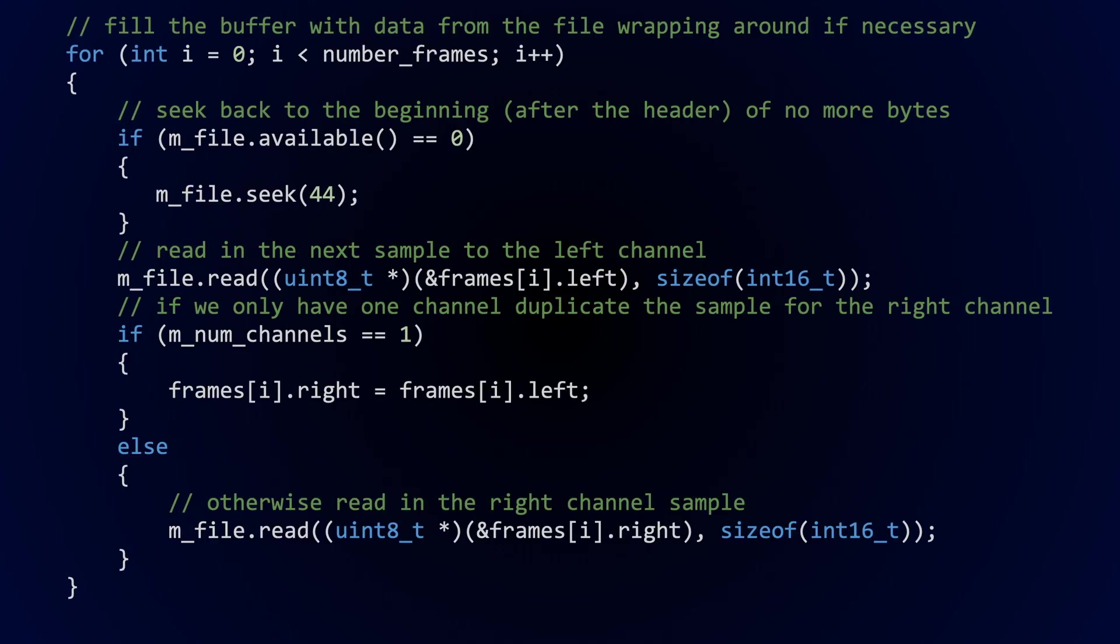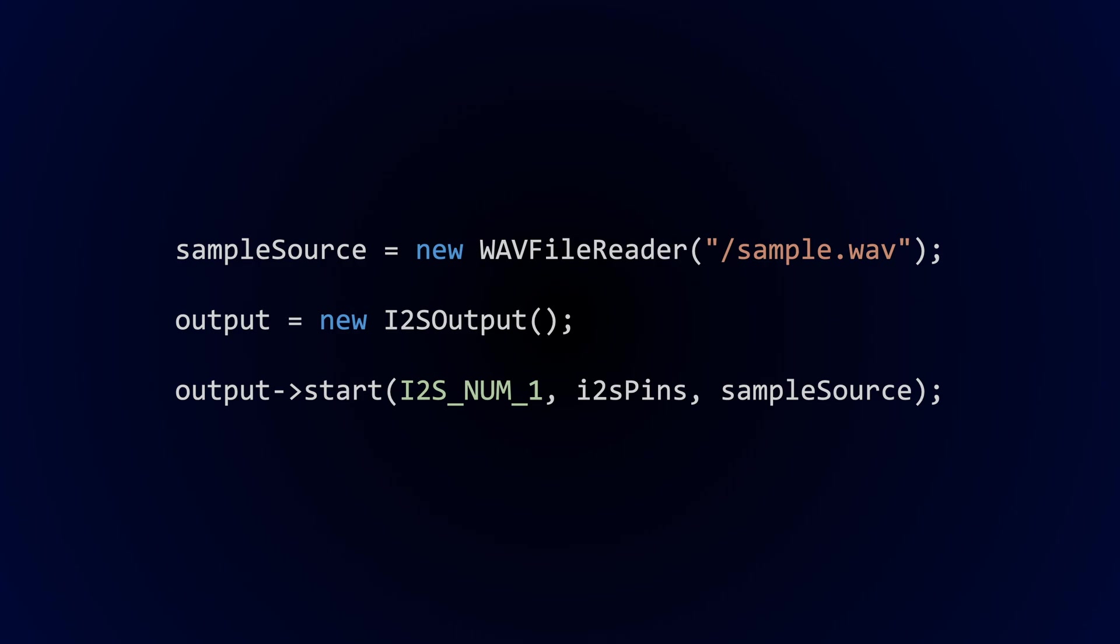And here's the basic code for reading samples from a WAV file. We seek past the header which we know is 44 bytes and then we can read a sample from the file. If we only have mono data then we copy across the left channel to the right channel. Otherwise we read in the next sample from the file for the right channel. All we need to do now is wire up the sample generator to the I2S output and we should get audio coming out of the speaker.